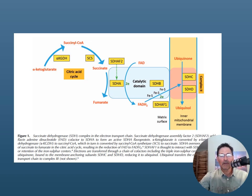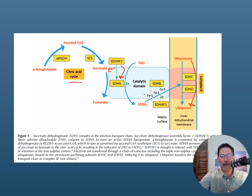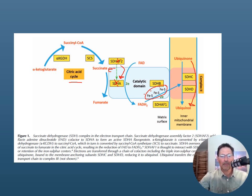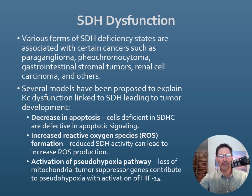We have the Krebs cycle — also called the citric acid cycle — and then four protein subunits that make up the succinic dehydrogenase complex. They receive electrons from succinate and pass them through different protein subunits, then through iron-sulfur clusters, from ubiquinone to ubiquinol, and that transfers those electrons downstream into complex III and complex IV. Something that affects these different protein subunits, or even the iron-sulfur clusters, will eventually affect complex II.